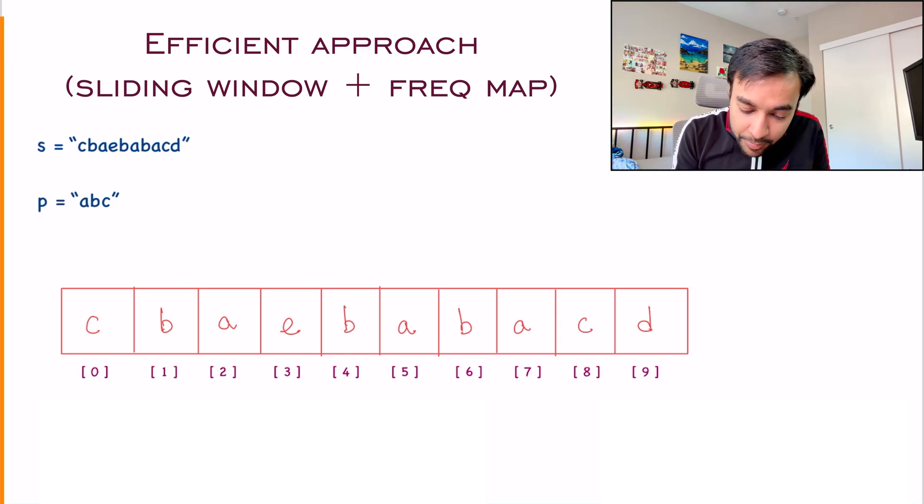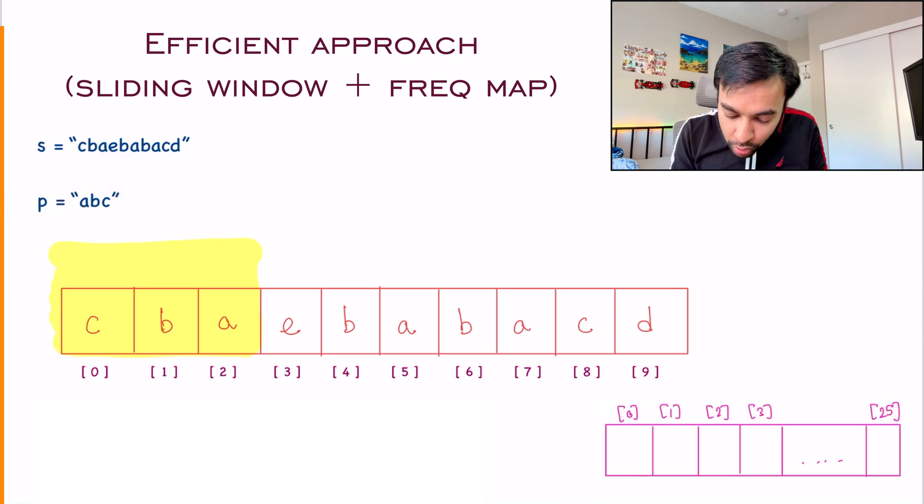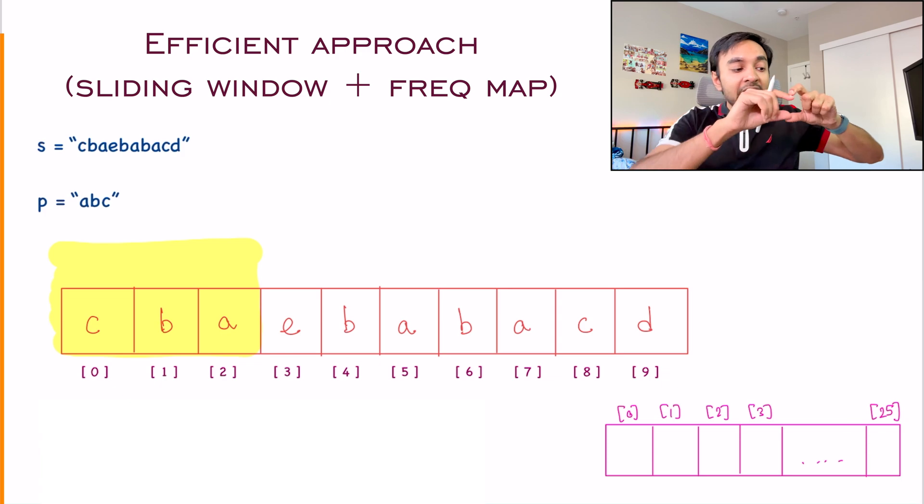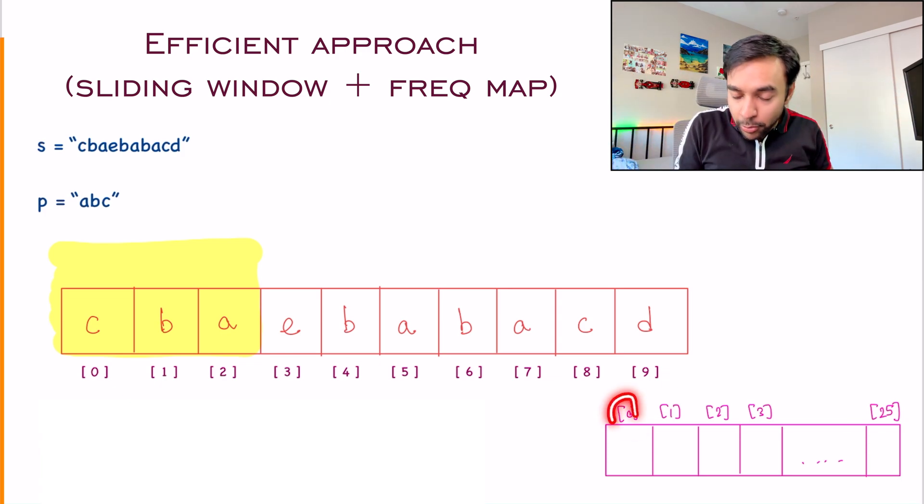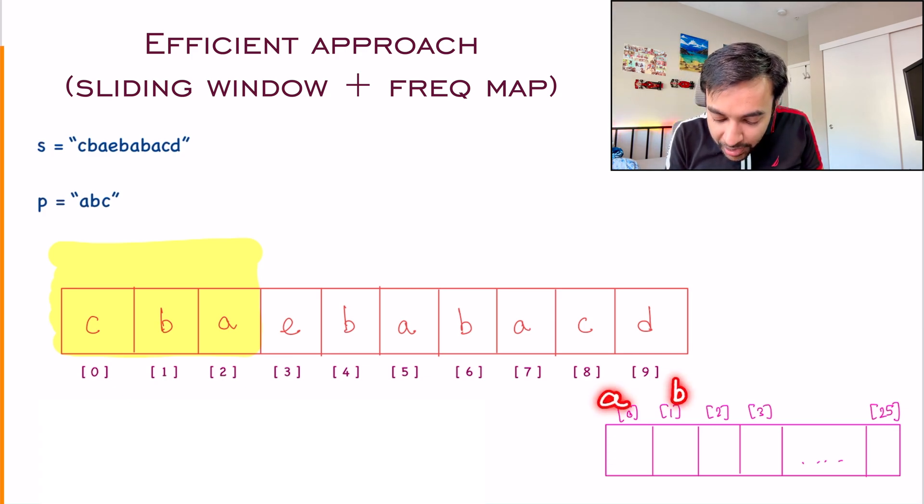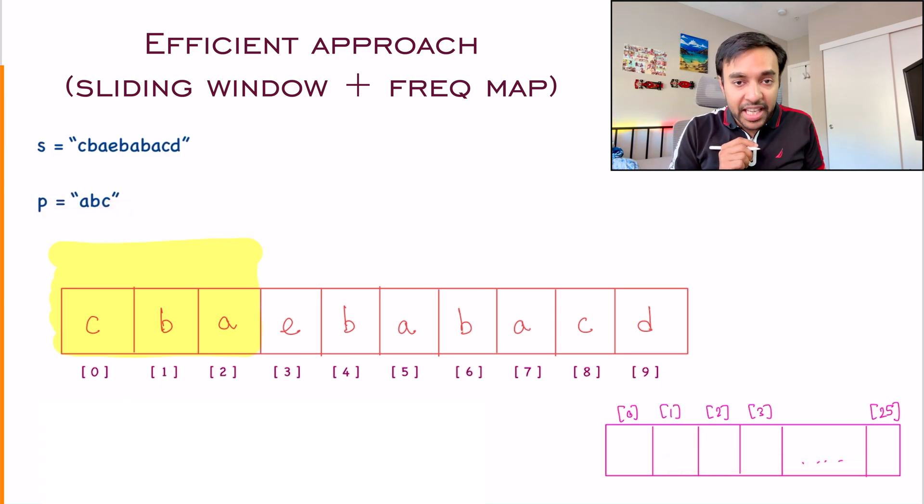Once again, I have this string and what I will do is I start off my sliding window. I take up my string P and then I will try to create a frequency array of this particular string. This frequency array will have 26 indexes starting from zero. This is meaning zero is representing a A, then one represents a B, two represents a C, three represents a D and then all the way up to Z.